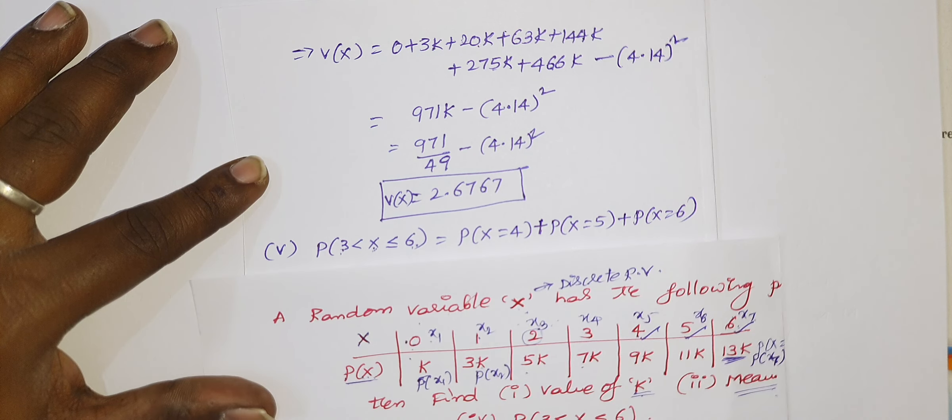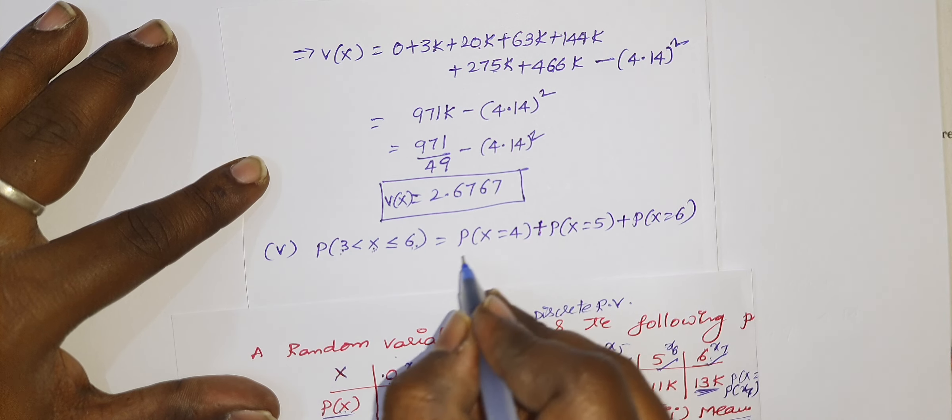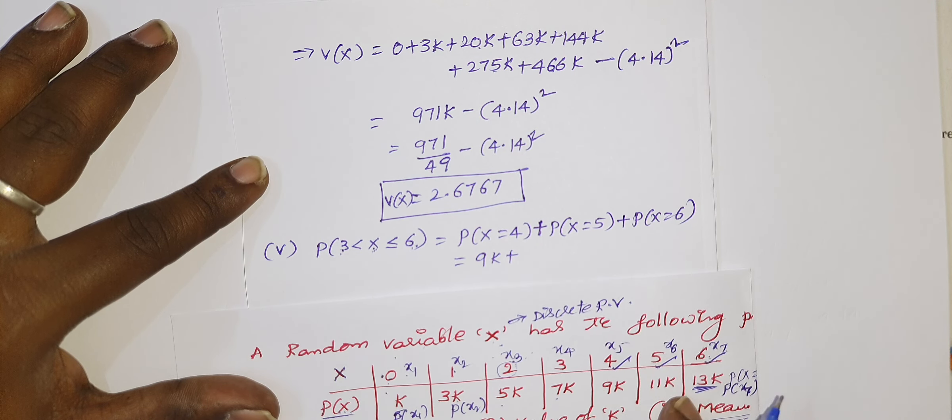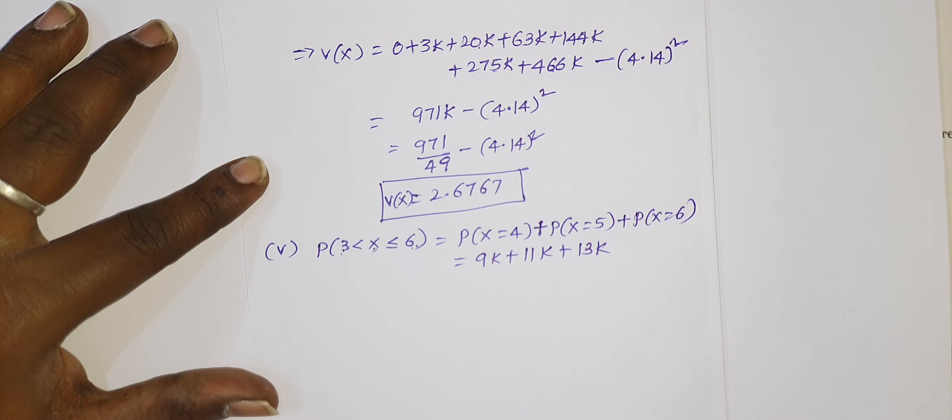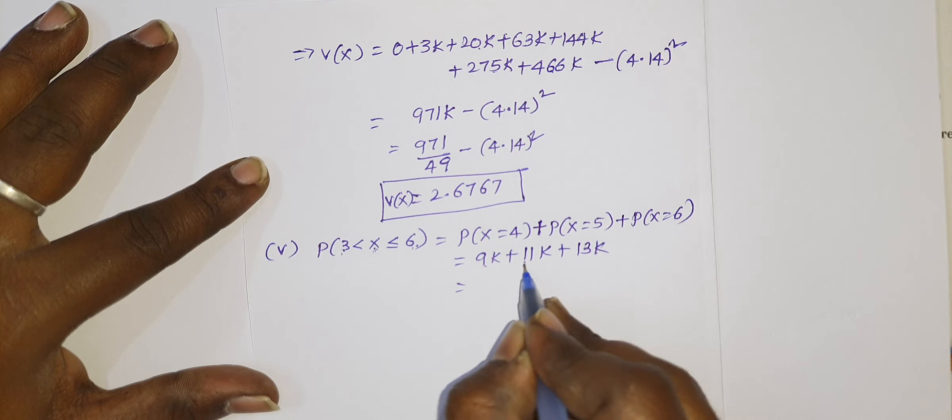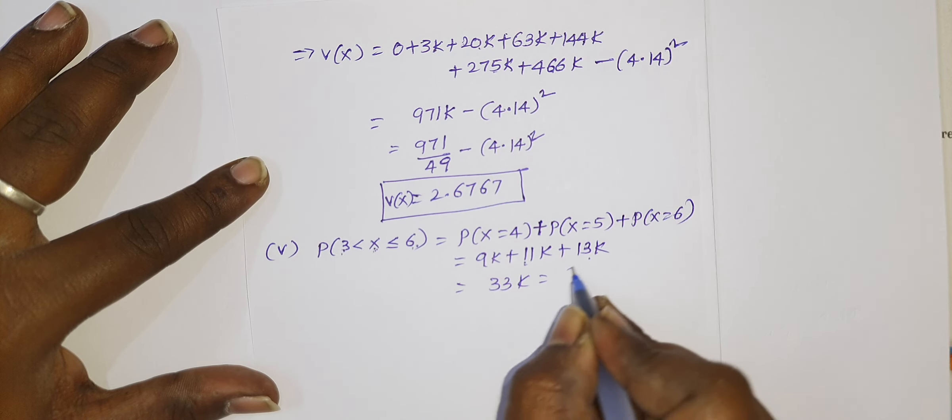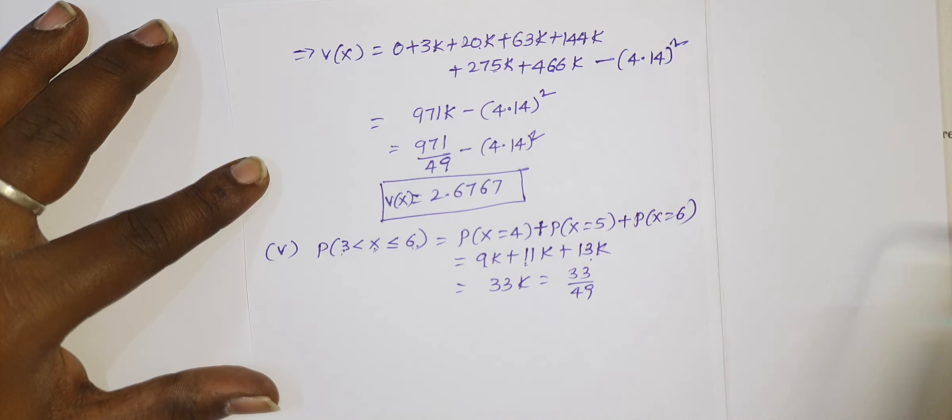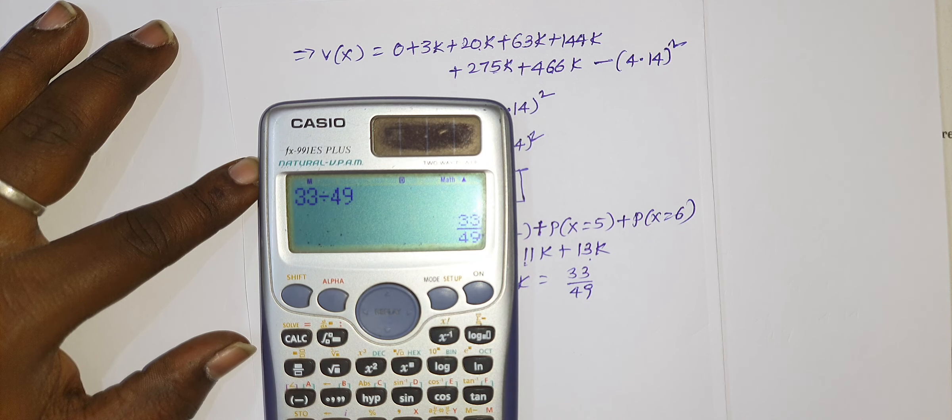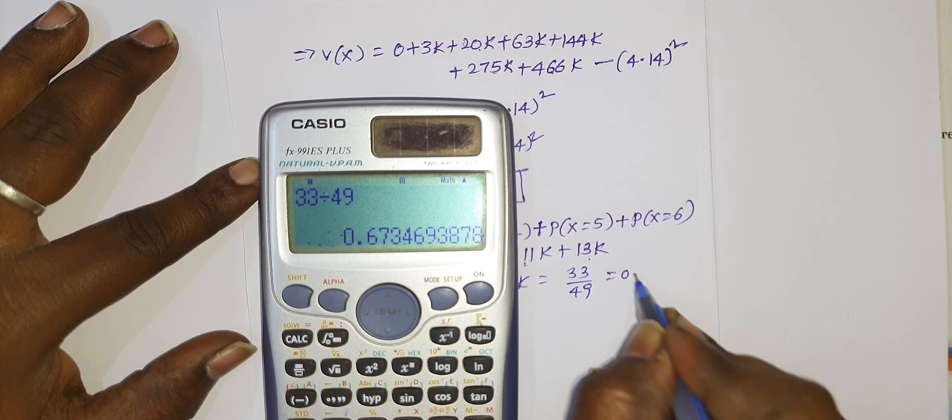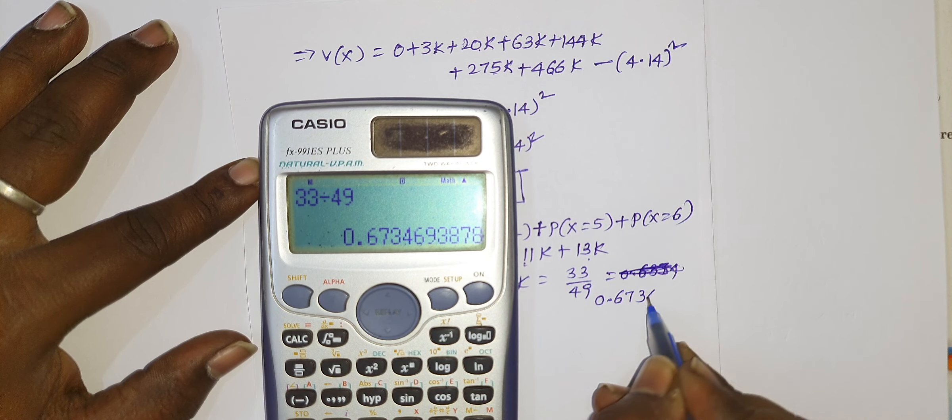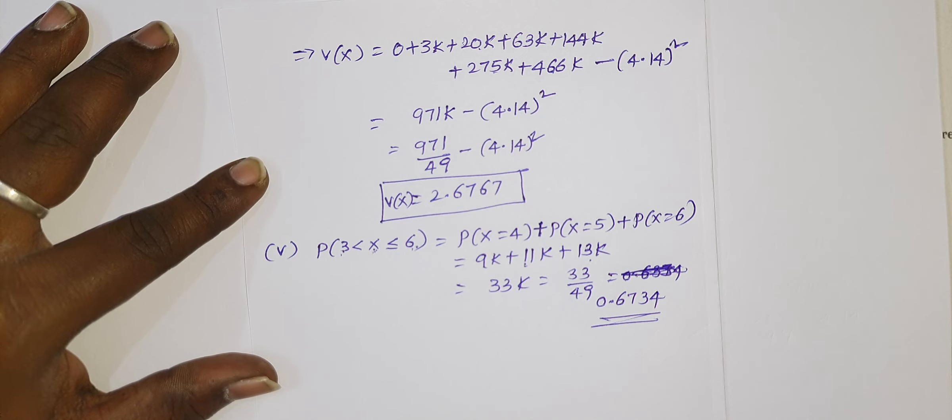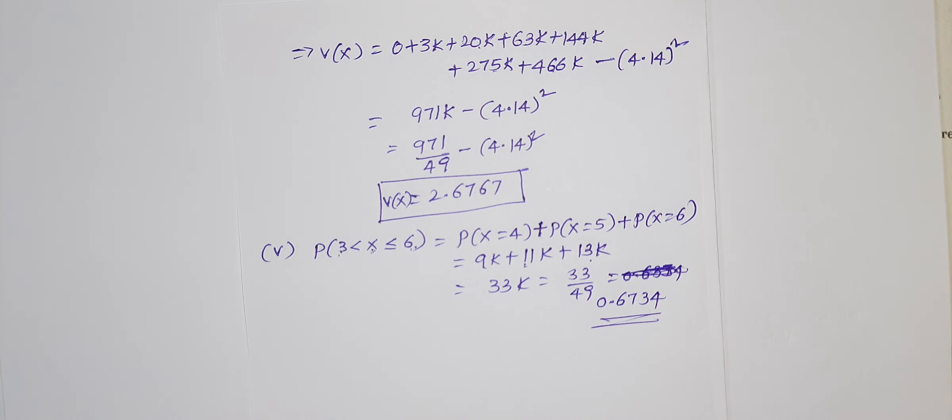So the required probability is x value may be 4 or probability of x values may be 5, or whenever we have or we can write addition, probability of x equals 6. You can add all three probabilities. So what is the probability that x value is 4? It would be 9k. What is the probability that x value is 5? It is 11k. It is 13k. And k value is 1 by 49. So 9 plus 11 is 20, 20 plus 13 is 33k, so 33 by 49. I got 0.6734. And don't forget one important point. Probability of any event should lie between 0 and 1. In this way we can crack the problem. In the next video, I will give some more examples on random variables. Thank you very much.